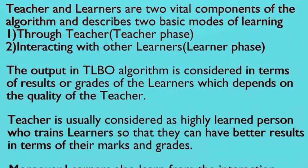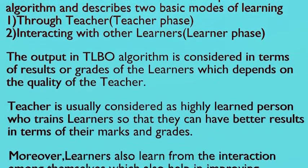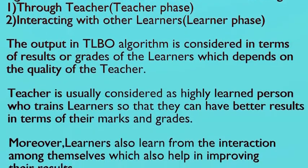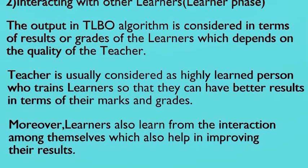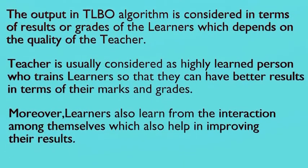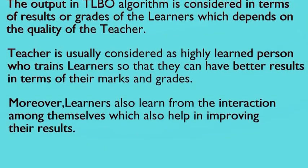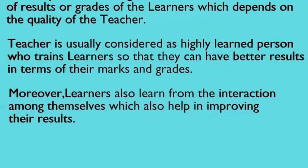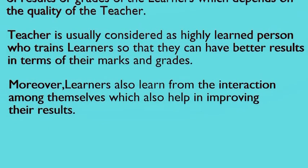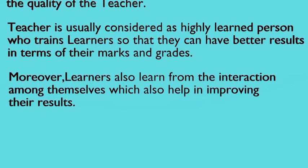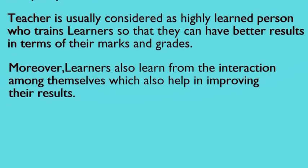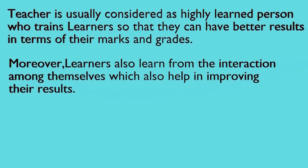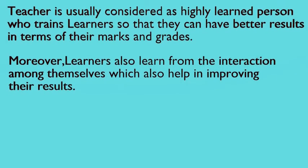Teachers and learners are two vital components of the algorithm and describe two basic modes of learning: through the teacher phase and interacting with other learners in the learner phase. The output in the TLBO algorithm is considered in terms of results or grades of the learners, which depends on the quality of the teacher. A teacher is usually considered as a highly learned person who trains learners so that they can have better results in terms of their marks and grades. Moreover, learners also learn from interaction among themselves, which also helps in improving their results.